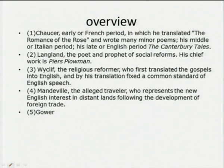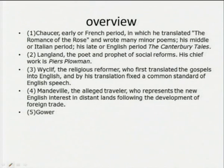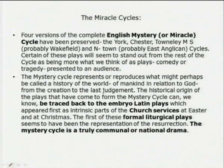In the overview of the Age of Chaucer, we have seen: Chaucer's early or French period — how he translated the Romance of the Rose and wrote many minor poems. Then his middle or Italian period. And his late or English period, dominated by the Canterbury Tales. Then we have Langland, the poet and prophet of social reforms, whose chief work was Piers Plowman. Wycliffe, the religious reformer, who first translated the Gospels into English. And Mandeville, the alleged traveler, who represents the new English interest in distant lands. And, very truly, John Gower.